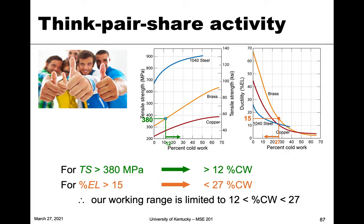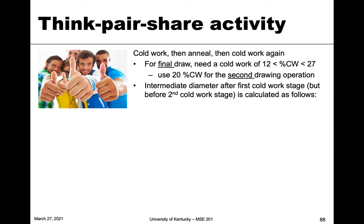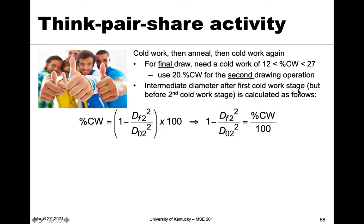Our strategy is: first cold work the material to some intermediate diameter, then anneal it — allowing recrystallization — which resets the properties back to zero percent cold work, then cold work again for the final draw. The final draw needs to fall within the 12 to 27 percent cold work range. We'll arbitrarily pick 20 percent for the final draw, since it's between those two bounds, and calculate the required intermediate diameter.